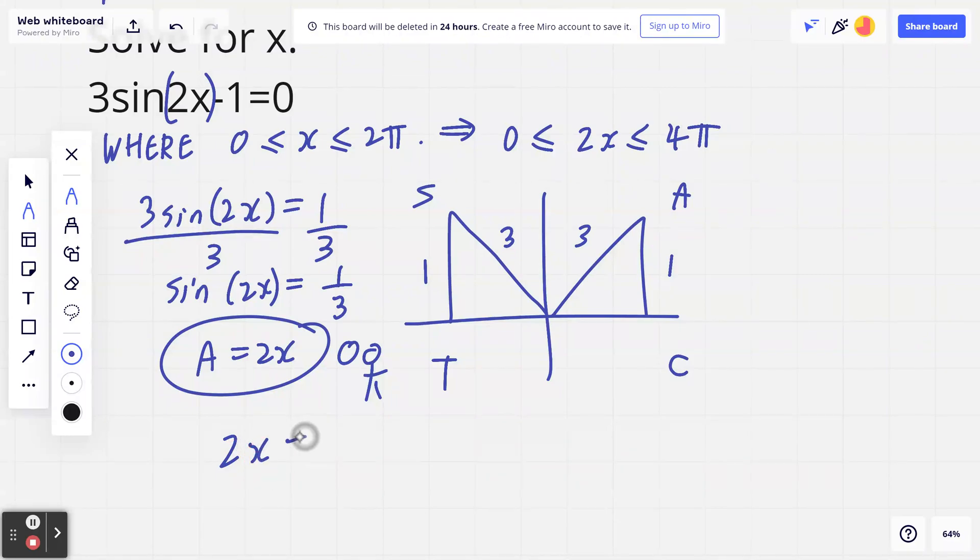For the sake of rounding, I'm going to round everything to four decimal places. So this is going to be approximately 0.3398, which is basically this related acute angle. So this angle right here, called the related acute angle, is going to be 0.3398. Same thing with this angle here.